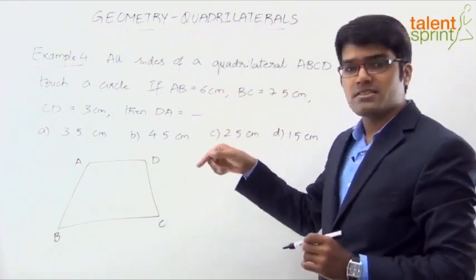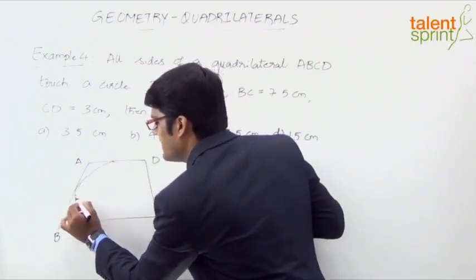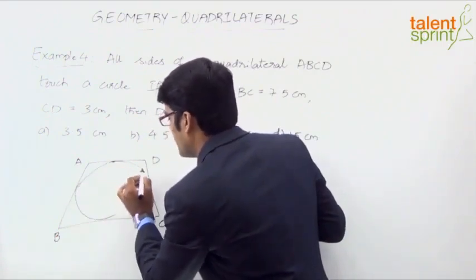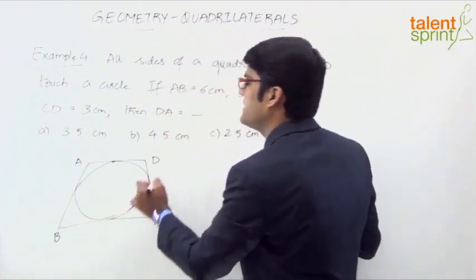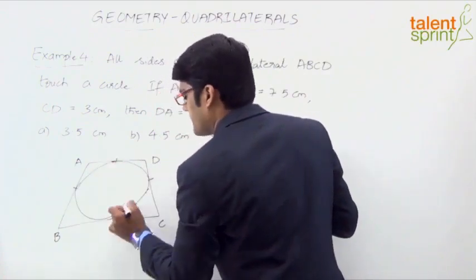Now, all the sides touch a circle. So we should draw a circle such that it touches all the four sides. It may not look like a perfect circle but the concept is more important. So let us say this is the circle. Now if you observe, it is touching all the four sides at these points here.